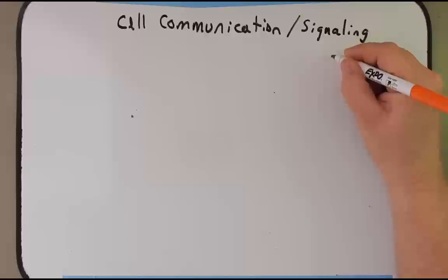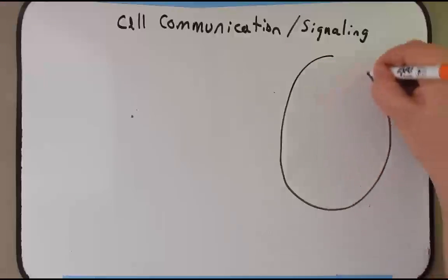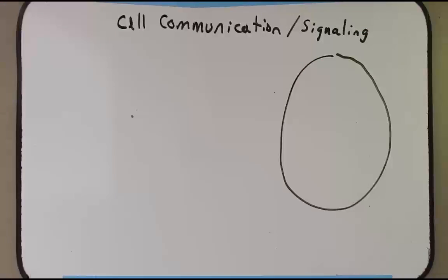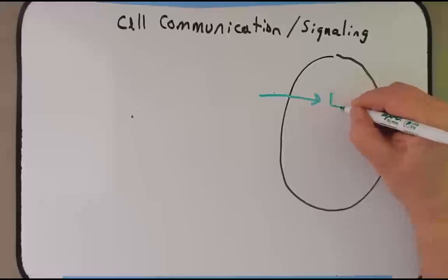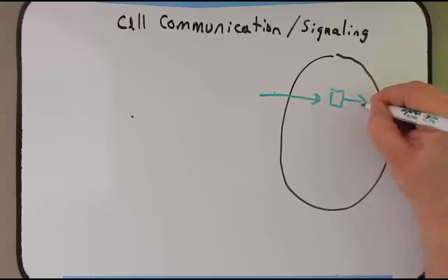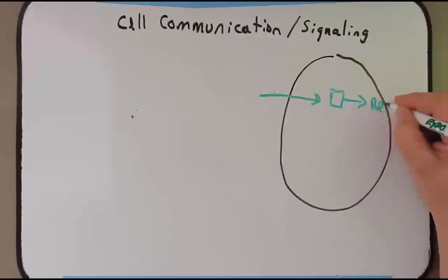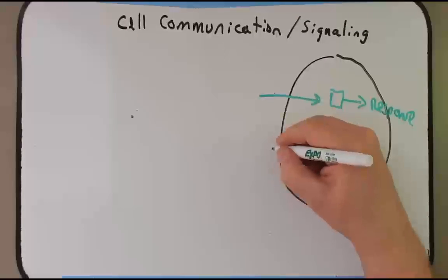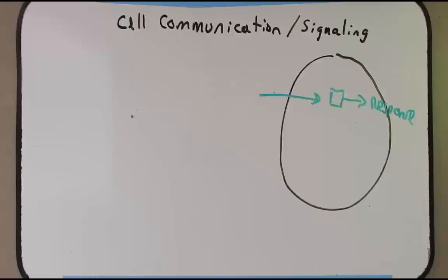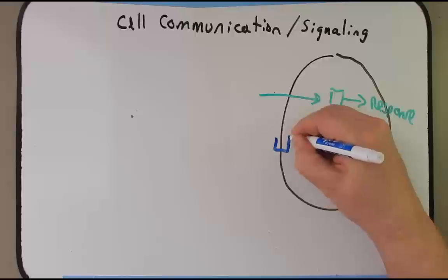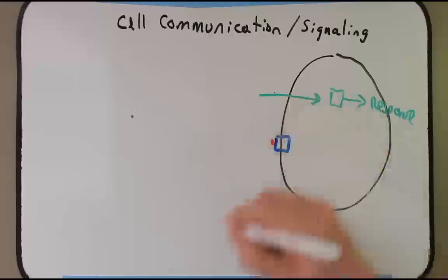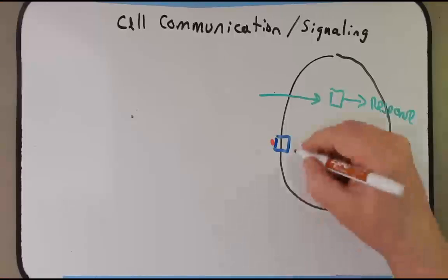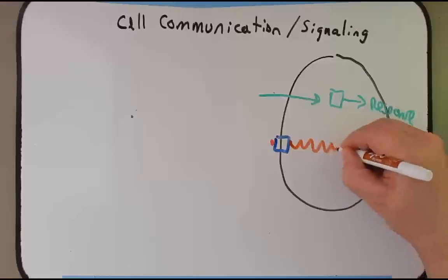Remember in the last podcast we talked about how we have a cell and how various mechanisms occur to allow a signal to either pass through the cell or bind to a target inside the cell to generate some kind of response. We also spent a lot of time talking about how a signal may bind to something on the outside of the cell, and in doing so generates some kind of response.